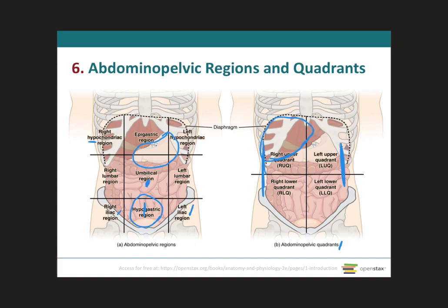Let's go over some of the other main organs you will need to know from this abdominal pelvic region. The stomach is right over here — most of your stomach is going to be located in the left upper quadrant. Behind the stomach is the pancreas, which will also be located in your left upper quadrant. Right underneath the liver you're going to have the gallbladder, which will be located in the right upper quadrant. Below these two main structures, the liver and the stomach, you're going to have part of your transverse colon — part of it will be on the right upper quadrant and the other half on the left upper quadrant.